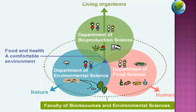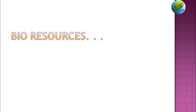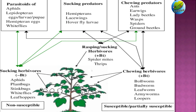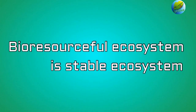An ecosystem comprises biological communities and the non-living environment, like agro-ecosystems and pond ecosystems. Bio-resources refers to the biodiversity of various organisms living in that ecosystem — for example, the different pests of cotton, natural enemies, hyperparasitoids, and microbes that affect them. The ecosystem should be more bio-resourceful.